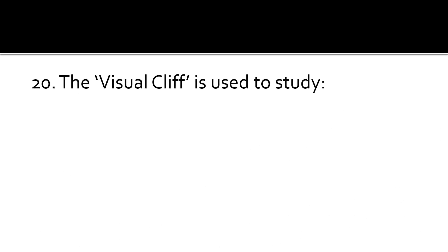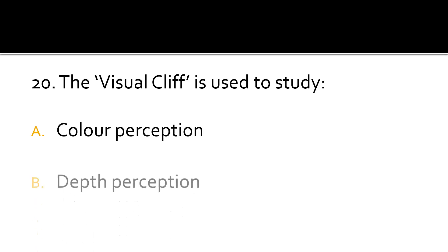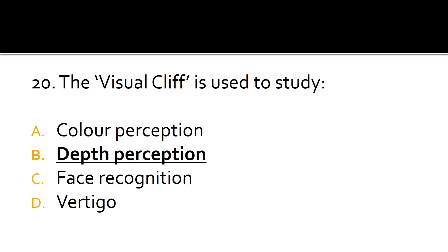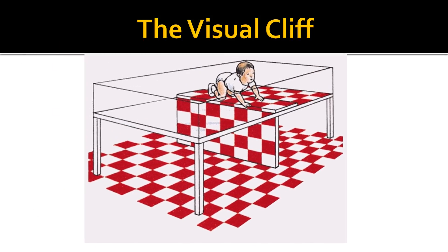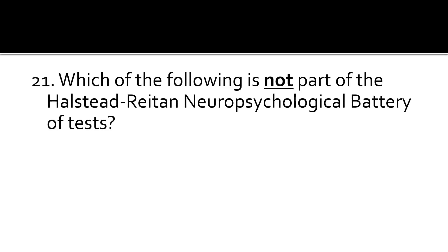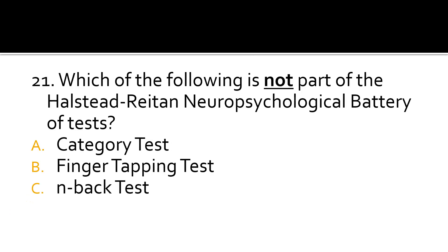Question 20. The visual cliff is used to study color perception, depth perception, face recognition, or vertigo? The correct answer is B: depth perception. The visual cliff is used to study depth perception, and this is a pictorial representation of the visual cliff.